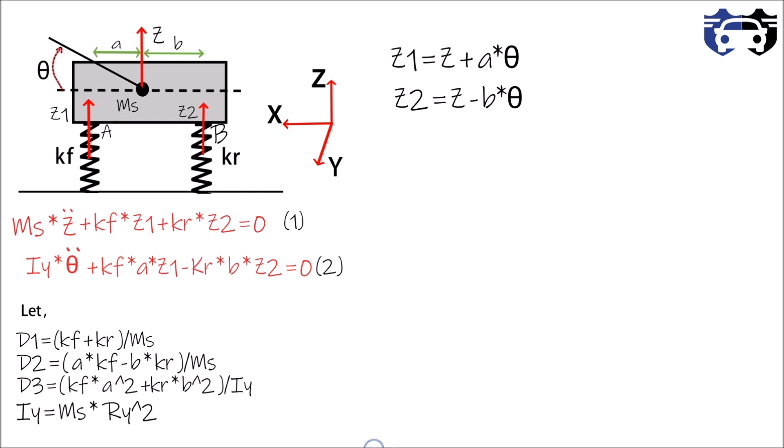Now putting these values of D1, D2, D3, and Iy in above equation one and two, we get the following values. Z double dot plus D1 multiply by z plus D2 multiply by theta equals to zero. This is our equation three. And theta double dot plus D3 plus D2 into z, whole divided by Ry square. This is our equation four. You can see from this equation that z and theta are related to each other. If car bounces with some value of z, then it will also pitch with some value of theta. Basically both are dependent on each other, and these equations are called coupled equations.